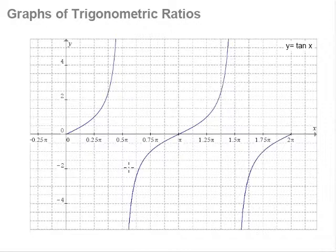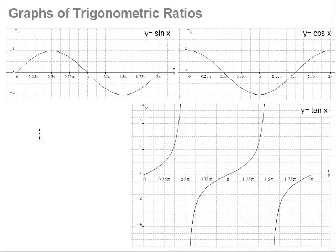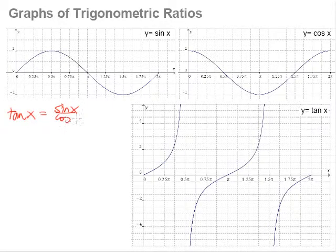Let us try to understand why our tangent curve looks the way it looks. To fully understand this, we have to remember that tangent x is actually the same as sine x divided by cosine x. I'm showing here on the screen all three different trig ratio curves. We have our sine x here, this is our cosine x, and this is our tangent x which is the focus for this section.